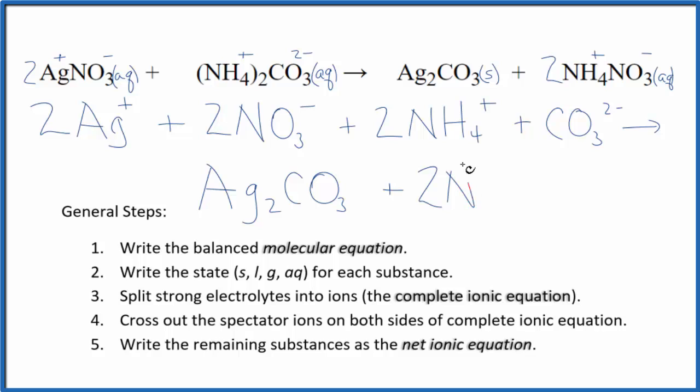And then we have the positive and the negative. So two ammonium ions, just like in the reactants, and then two nitrate ions, also just like the reactants. So this is our complete ionic equation.